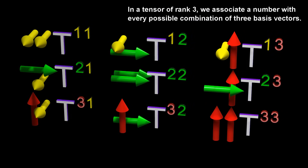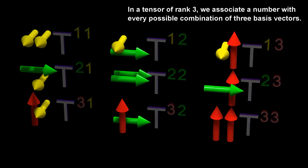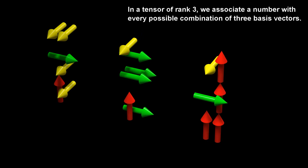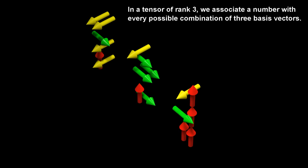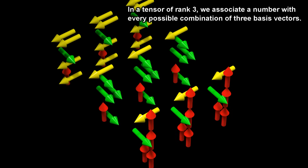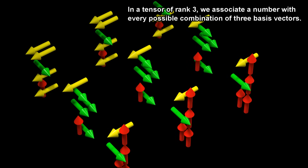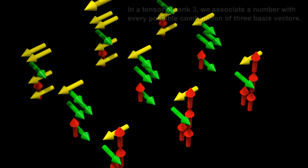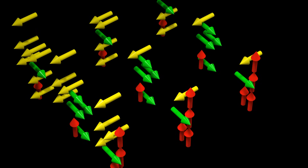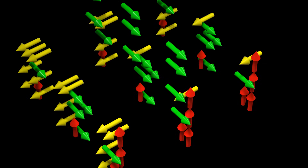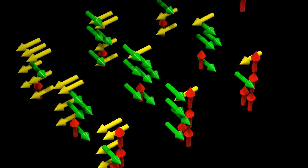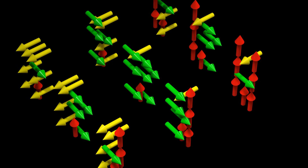In a tensor of rank 3, we associate a number with every possible combination of three basis vectors.